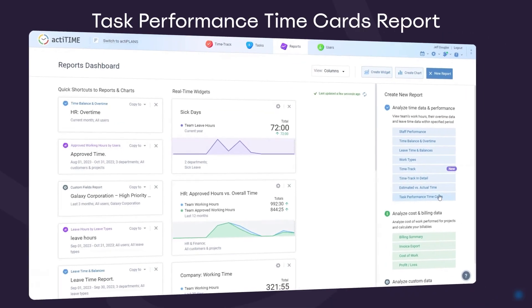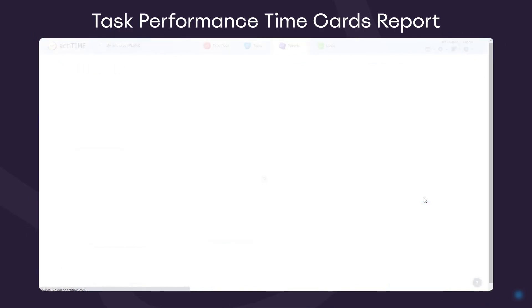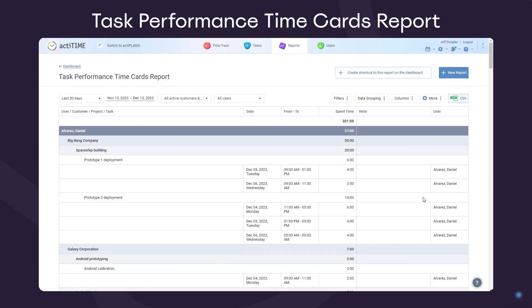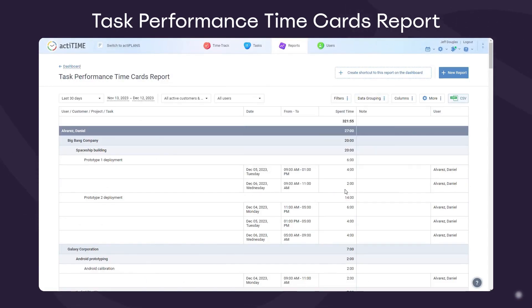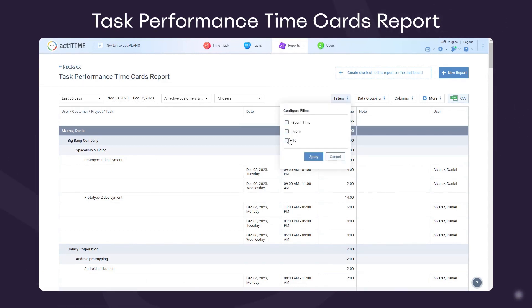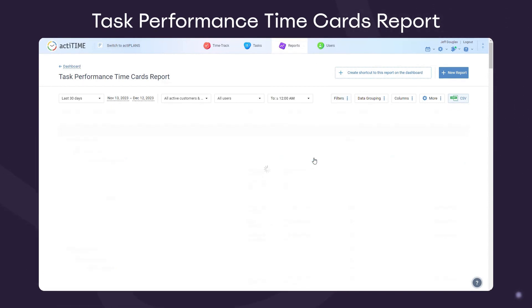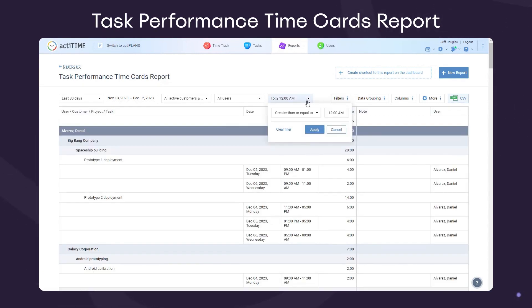The Time Cards report is another option for data analysis. It shows when your team members worked on tasks and if they followed their schedules. Using data filters, you can see when employees worked after hours or earlier than their starting work time.